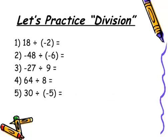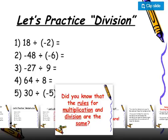Let's practice division. 18 divided by minus 2 — can you guess the answer? Solve all five parts. For example, 30 divided by minus 5: one value is positive and one is negative, so the answer is negative. For minus 27 divided by 9: the numerator is negative and denominator is positive, so the answer is negative. Let's have a look at the answers.